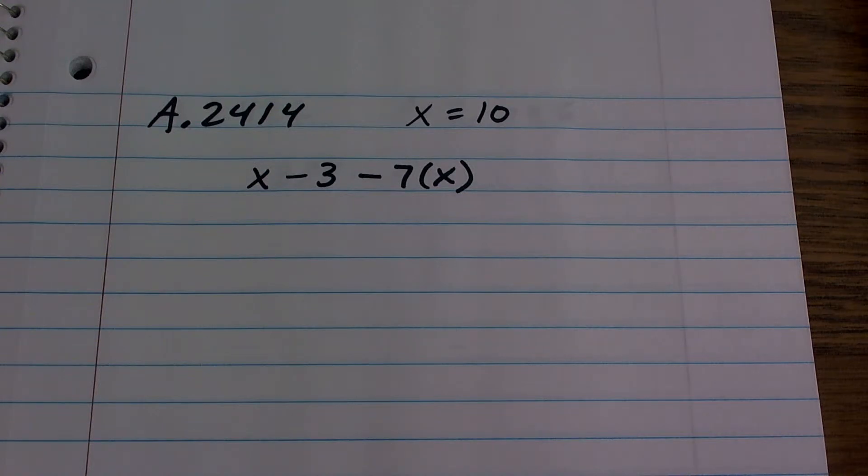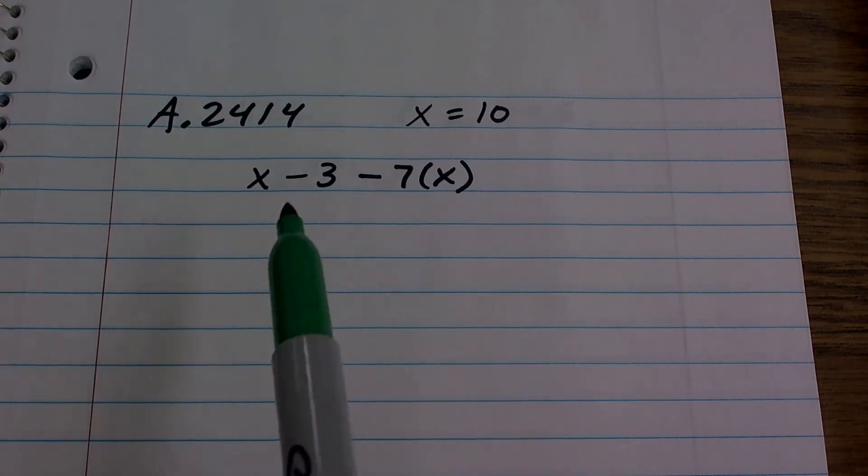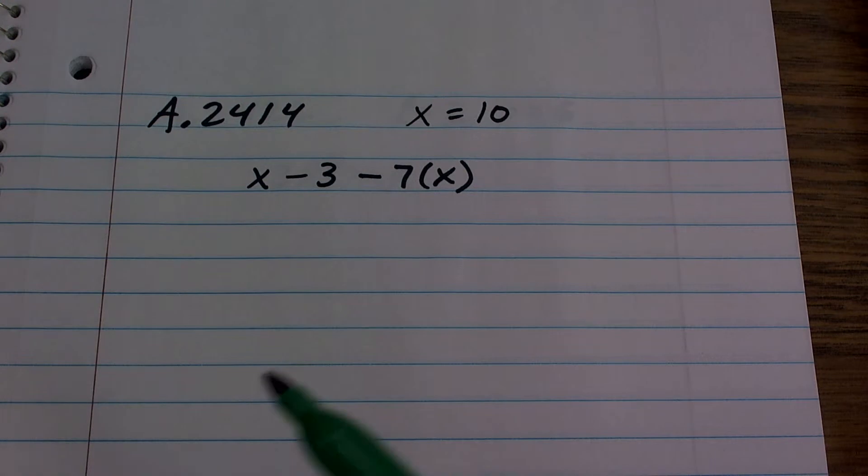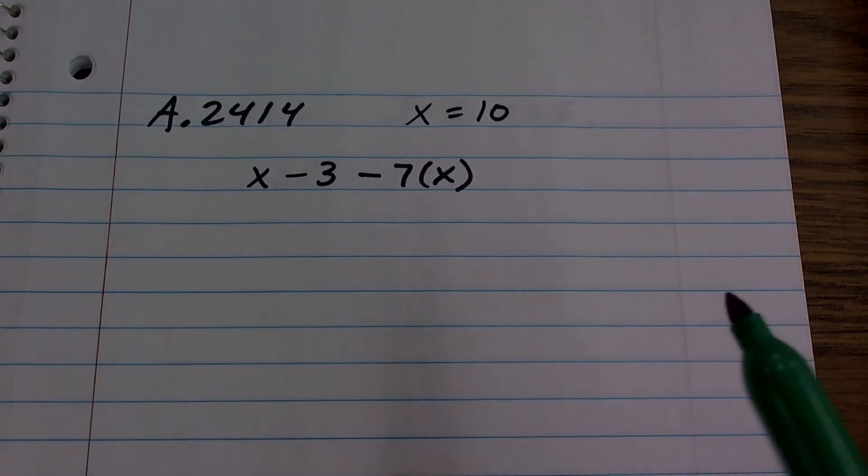All right, so we're getting a little tricky here. Now, what I'm doing is I'm introducing two of the same variable. So I have a number minus 3 minus the multiplication of 7 and that number.